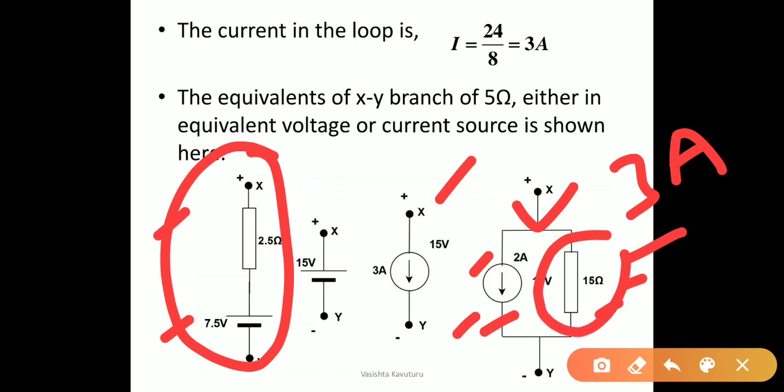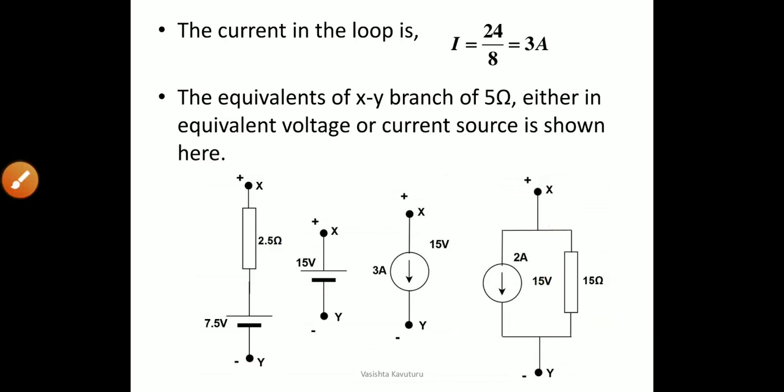Here, this is a current source of magnitude 2 amperes; the remaining 1 ampere can be represented with a 15-ohm resistance branch. The voltage between X and Y is 15 volts, therefore 15 divided by 15 is 1 ampere, so the total current is 3 amperes. This means the entire substitution theorem can be represented as ideal sources or practical sources.